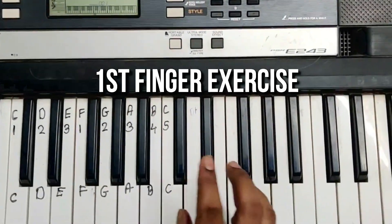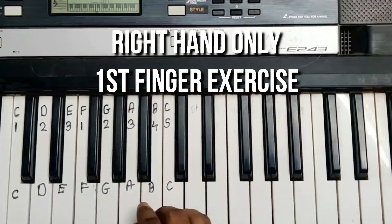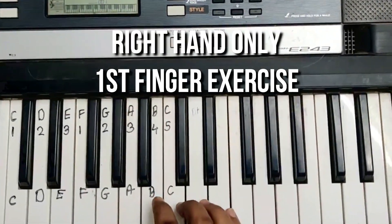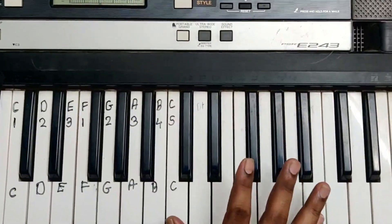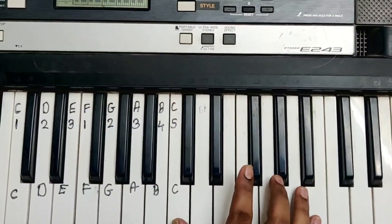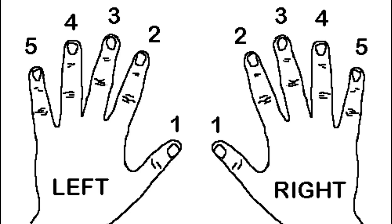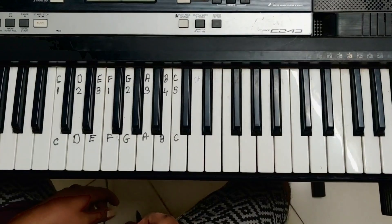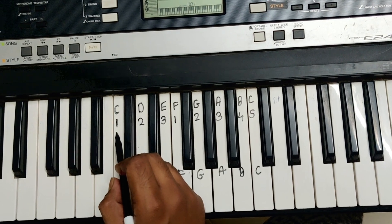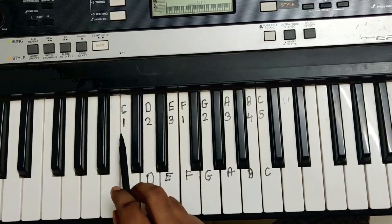So the first exercise we are going to start with your right hand. Naming your fingers is a very important thing in this first lesson. Thumb is called 1, index is called 2, middle is called 3, ring finger is called 4, and your little finger is called number 5. So as I have named the numbers on this keyboard, you can see: 1, 2, 3, then 1, 2, 3, 4, 5.